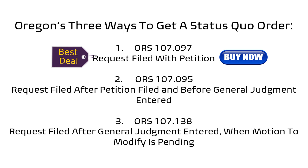You can also get a status quo order after you file the petition under 107-095. A lot of people do this because they don't know how easy it is to get one under 097. So they file their petition without a status quo order, and then after the case begins unfolding they realize they need one to keep things stable. If you go under 095, you have to set a hearing, go to court — it's kind of a bigger deal.